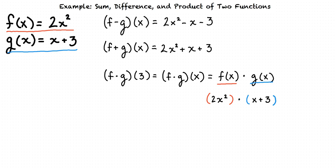And using the distributive property, this results in 2x cubed plus 6x squared. Next, we will substitute 3 for x and simplify.